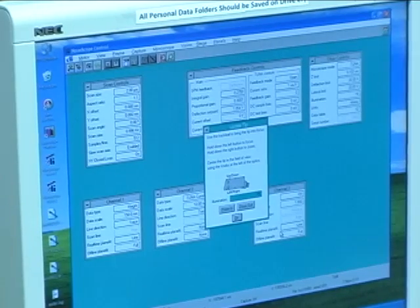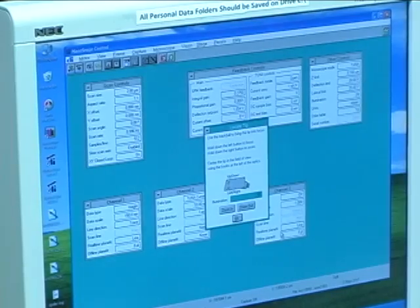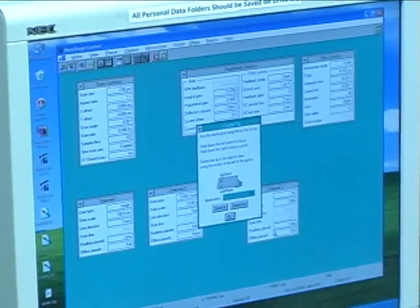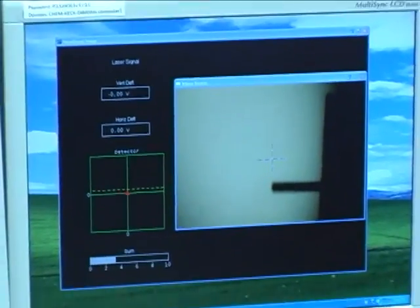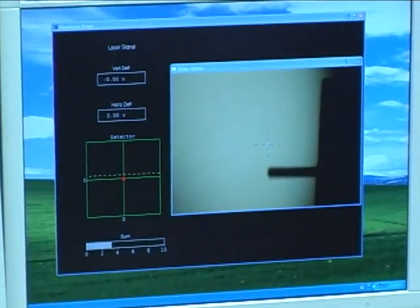We'll use the software to adjust the illumination on our sample until our optical microscope is bright enough to see the image. We'll then use our trackball to focus on the tip.